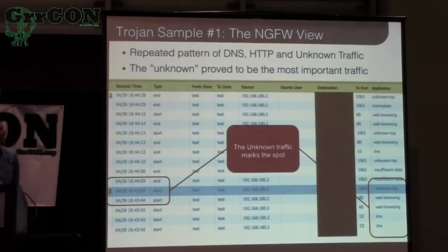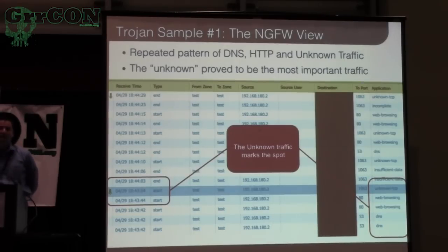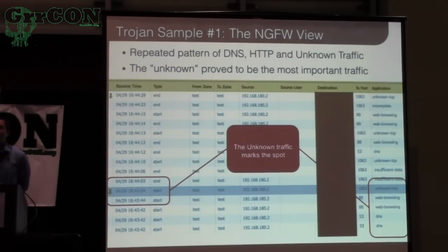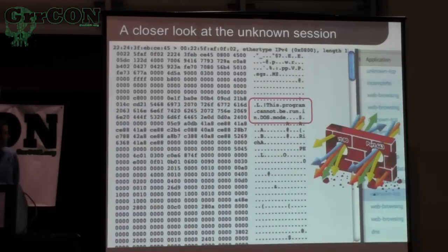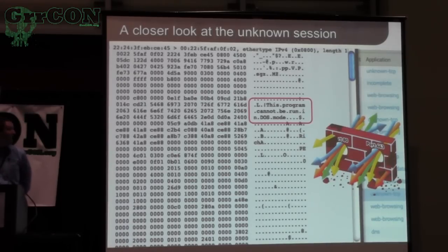We took the PCAPs from that malware during its analysis session in Wildfire and replayed it through the appliance, looked at the logs, and got a feel for how this would look from an operator's point of view if they had no idea this was running. You can see the application column oscillate between DNS, web browsing, unknown TCP, DNS, web browsing, unknown TCP. Looking at that unknown TCP session — almost immediately, anyone who has seen this before knows exactly what you're looking at. You've got the MS-DOS MZ header with the dead giveaway string. Basically this is just opening up a raw socket and pumping out a binary to update itself or pull down additional capabilities.